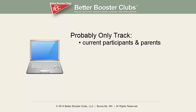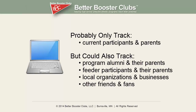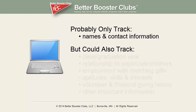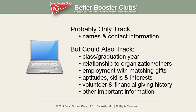You probably only use this system to track your current program participants and maybe even their parents, but you probably don't have up-to-date information about other important constituents and potential supporters — people like program alumni and their parents, your feeder program participants and their parents, local organizations and businesses, and other friends and fans. You probably only have names and contact information and don't have much additional information like their class or graduation year.